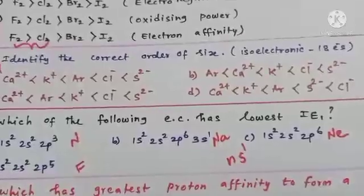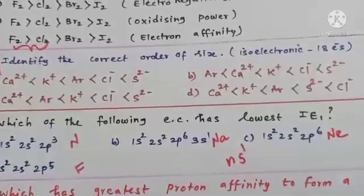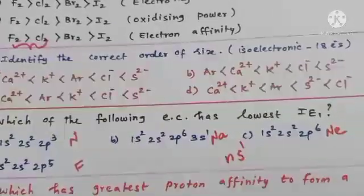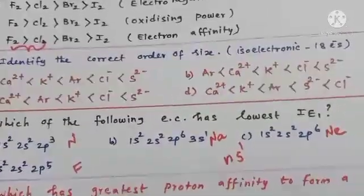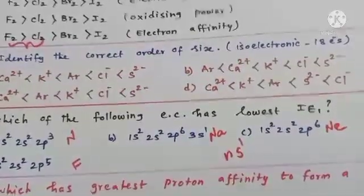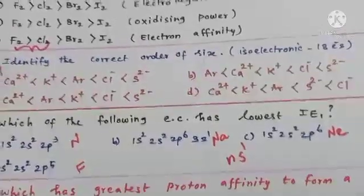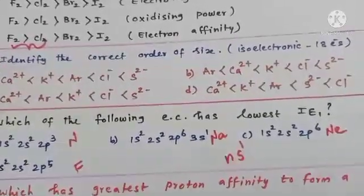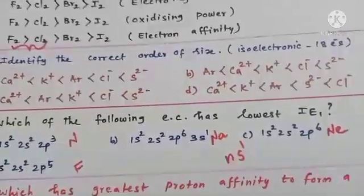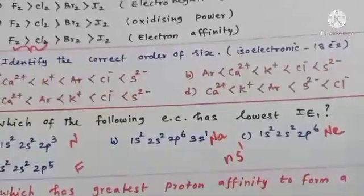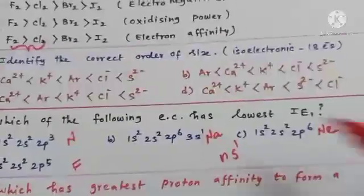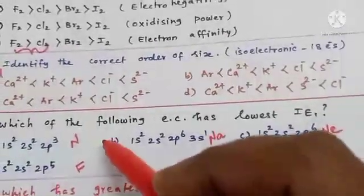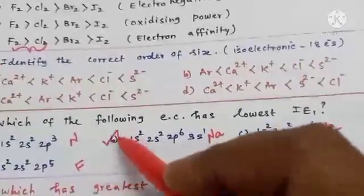Among the four configurations, sodium (option B) — 1s² 2s² 2p⁶ 3s¹ — is the alkali metal, and therefore has the lowest first ionization enthalpy. Option B is the correct answer.